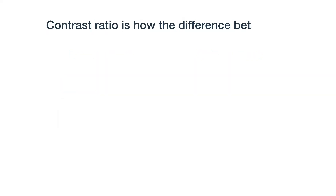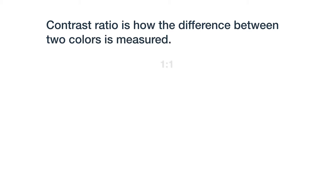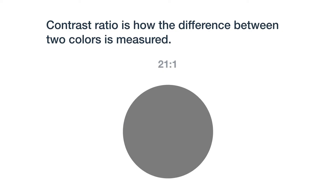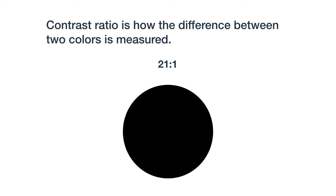Contrast ratio is how the difference between two colors is measured. It can range from 1 to 1, which would be the same color for the foreground and background, to 21 to 1, which would be black and white for either the foreground or background.